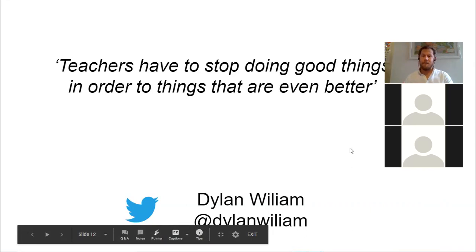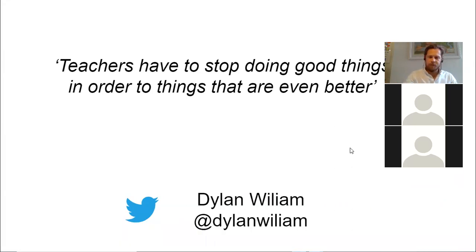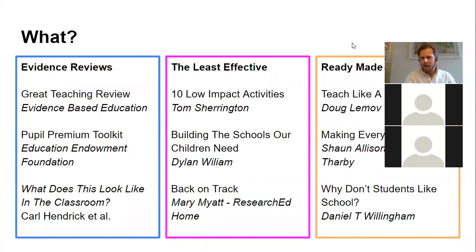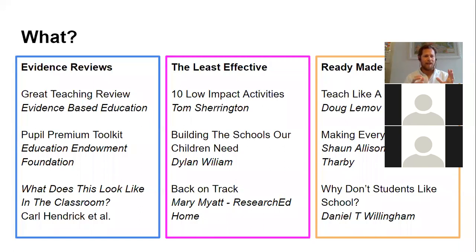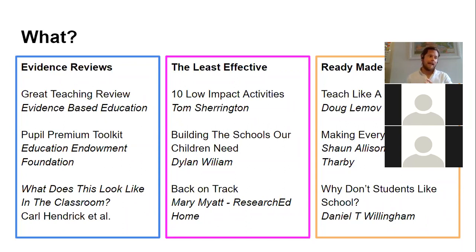So how do we do that? I've broken this down into three different sections. First, in the blue box, are evidence reviews done by organisations like Evidence Based Education and the EEF, who have gone away, looked through everything for us, and summed it up in succinct documents. We can look through the best of what's been said and try to apply it in our own schools — similar to a literature review, establishing the current state of play.